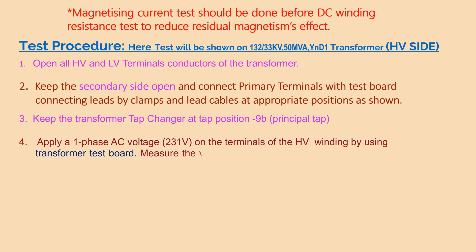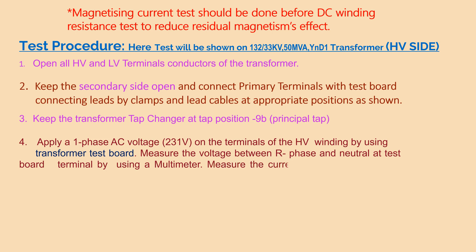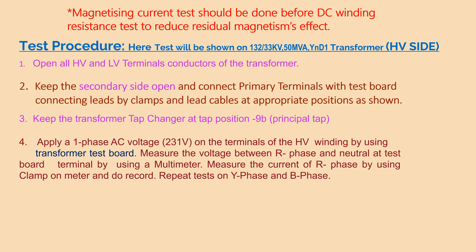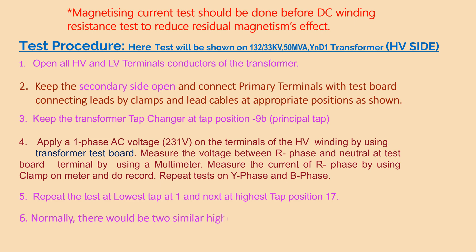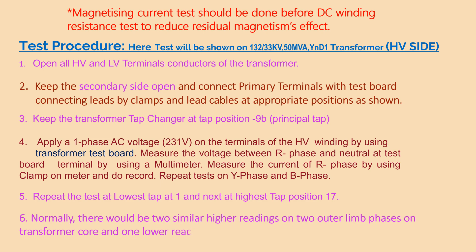Measure the voltage between R phase and neutral at the test board terminal using a multimeter. Measure the current of R phase using a clamp-on meter and record it. Repeat these tests on Y phase and B phase. Repeat the test at the lowest tap position 1 and next at the highest tap position 17. Normally there would be two similar higher readings on the two outer limb phases on the transformer core, and one lower reading on the central limb phase. Please watch the testing procedure by animated pictures.